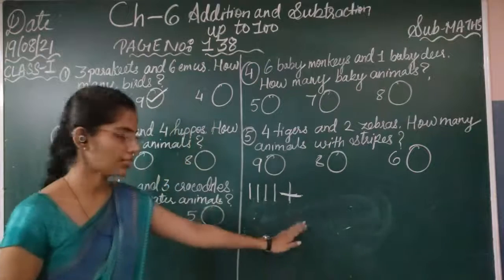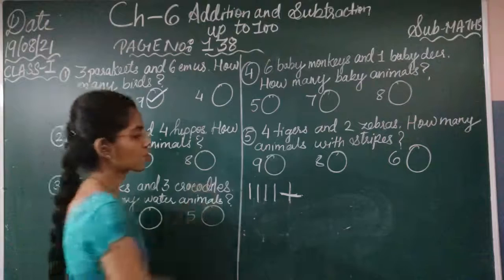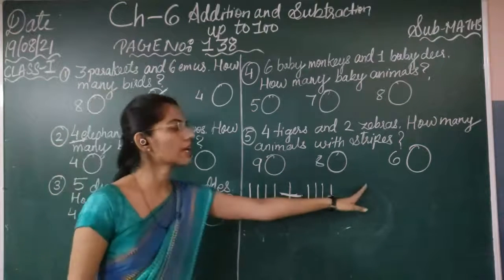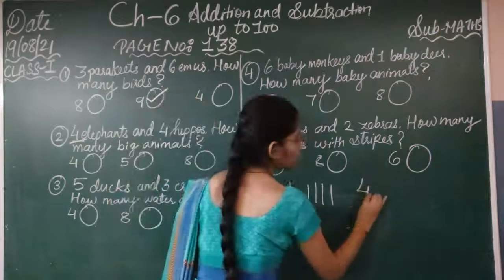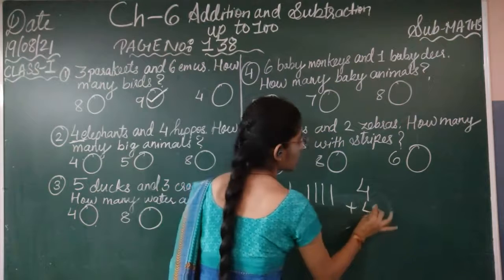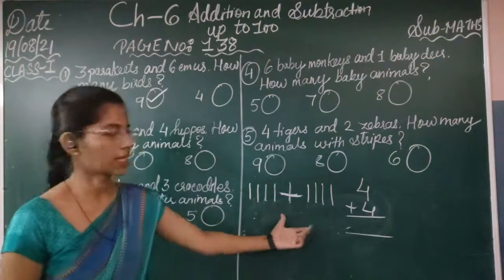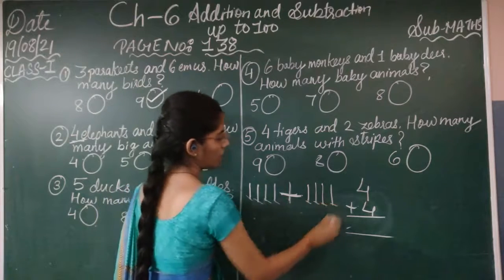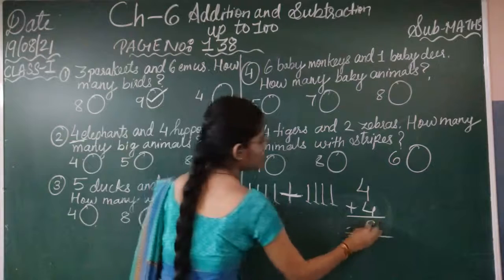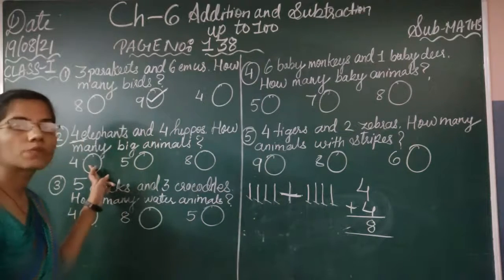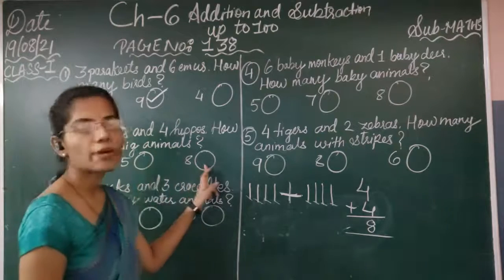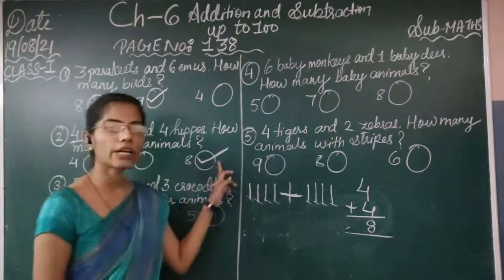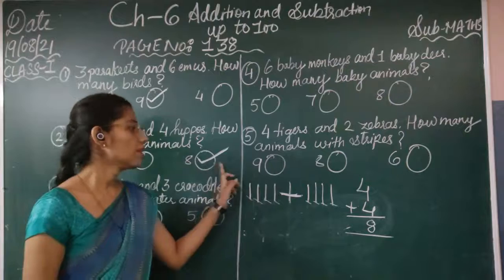Then we put the addition symbol, and for 4 hippos we draw 4 more lines. We can also arrange top to bottom: 4 on top, plus, 4 below. Count all the lines: 1, 2, 3, 4, 5, 6, 7, 8. Total value is 8. It means 4 plus 4 is 8. The options are 4, 5, and 8. The correct answer is 8, which is the third option. We put a tick mark on that option.